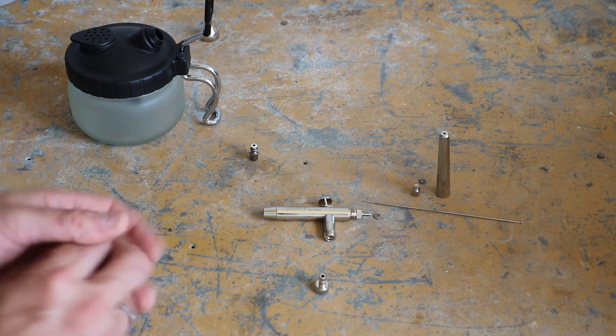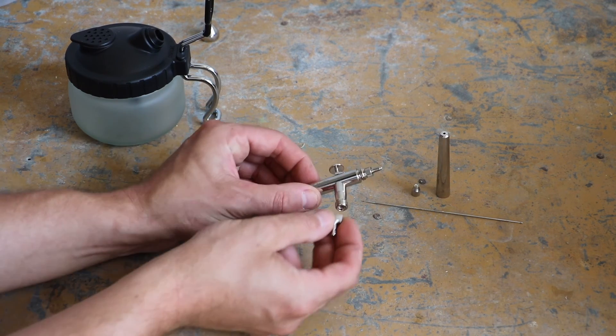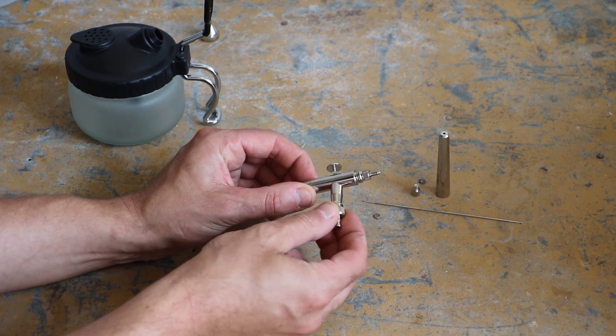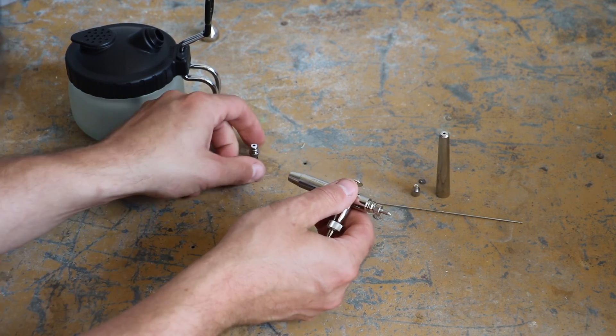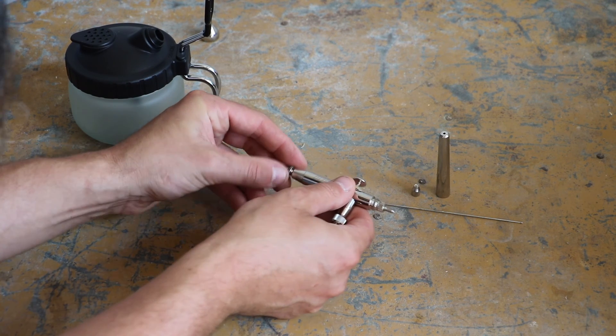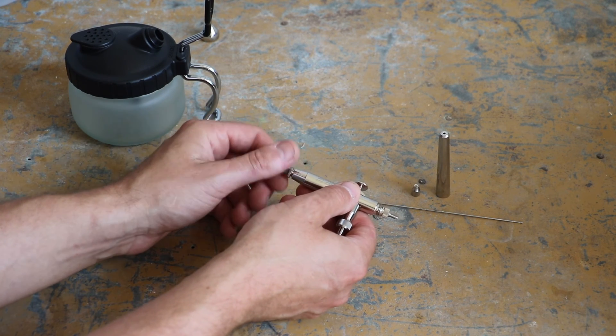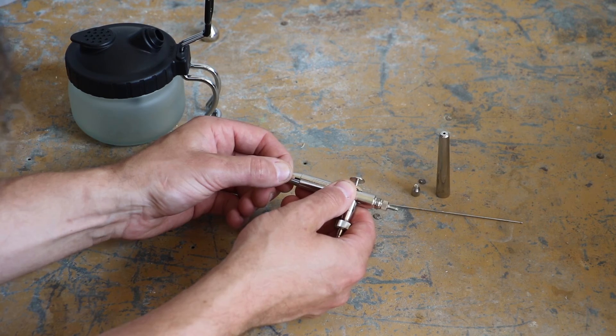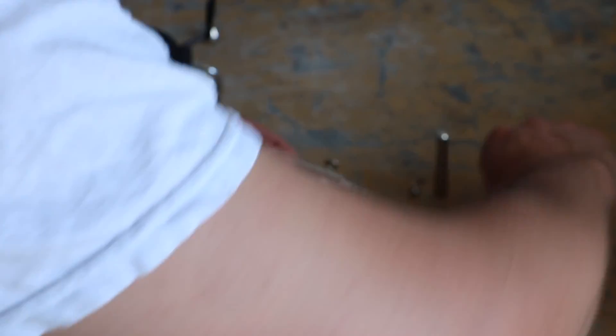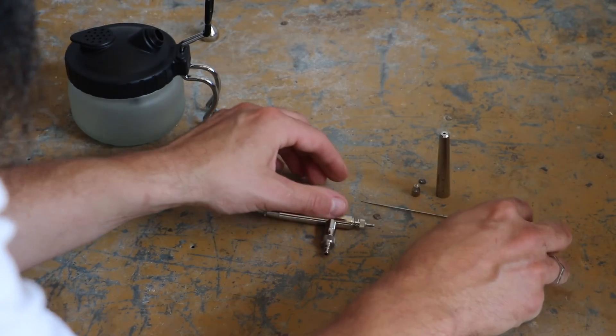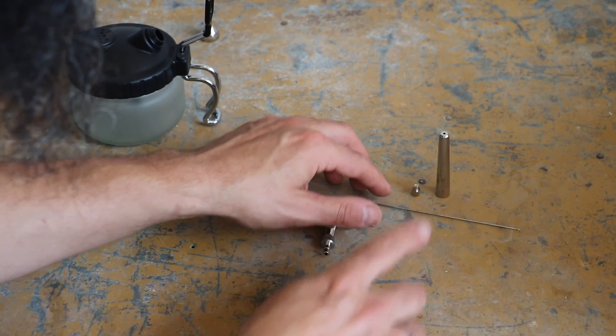And I'm now going to put this back together so we will go back in the same order as we did. We're going to put the valve on and screw it up finger tight. We are now going to put the nozzle and air head back on and finger tight.